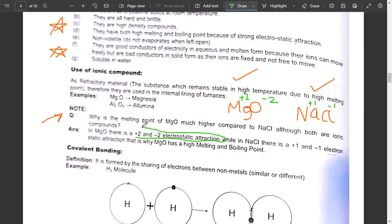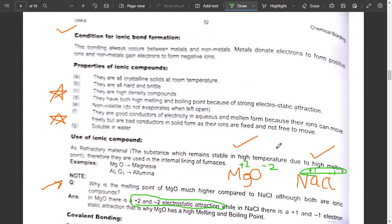The reason is that in MgO, there is a plus 2 and minus 2 electrostatic attraction which is stronger. When there is plus 1 and minus 1 electrostatic attraction between sodium and chlorine, that is weaker. That is why magnesium oxide, having plus 2 and minus 2 attraction, has a high melting point. These properties and uses of ionic compounds are important, and this question is very important.